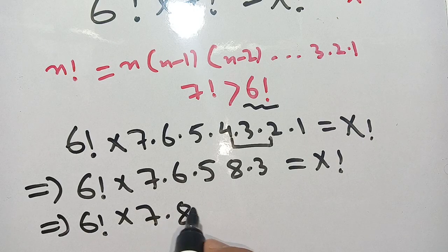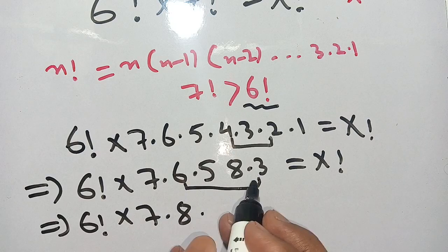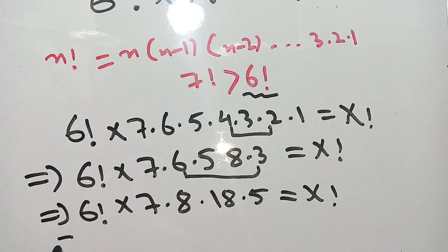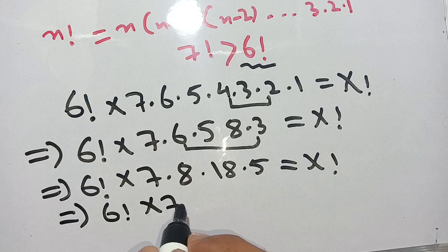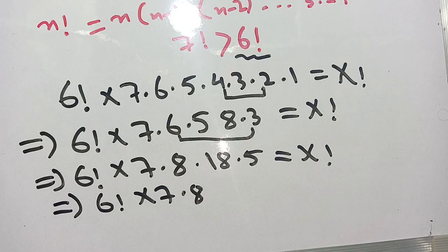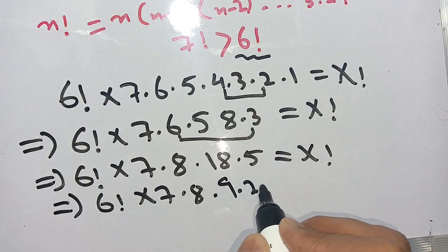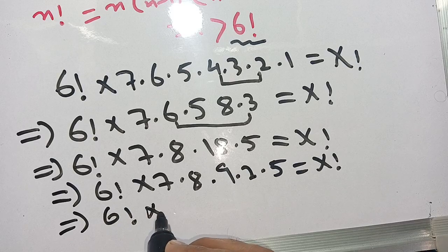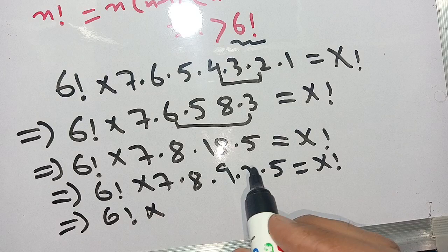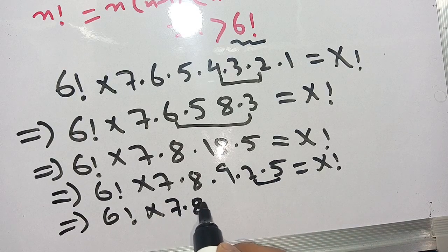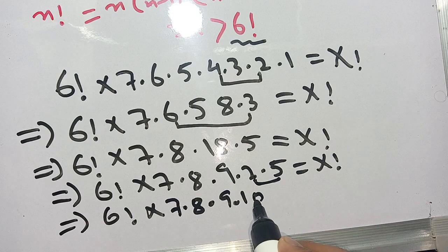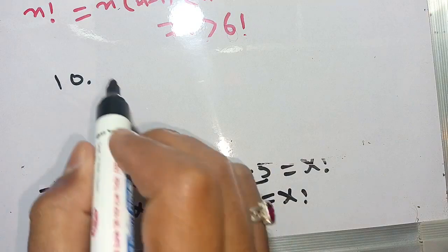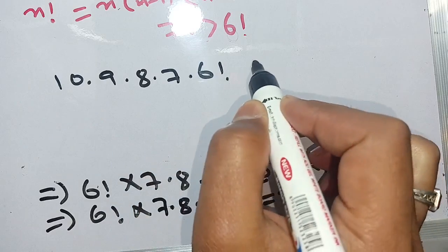We can write this as 6 factorial times 7 times 8. We rewrite 18 as 9 times 2, times 5, simplifying further and grouping terms. Now we can rewrite this as 10 times 9 times 8 times 7 times 6 factorial, equal to x factorial.